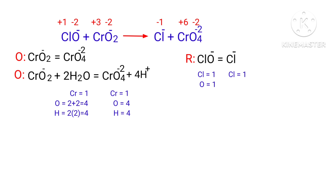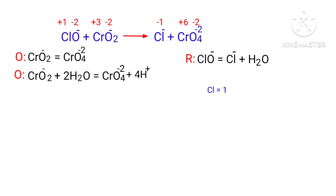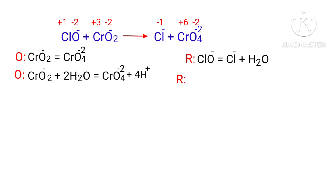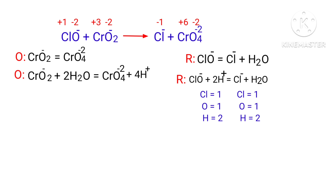Now balance the number of atoms in the reduction half reaction. To balance the oxygen atoms, add water molecules. Once the oxygen atoms are balanced, balance the hydrogen atoms by adding H⁺ ions. Now the number of atoms are balanced in the reduction half reaction.